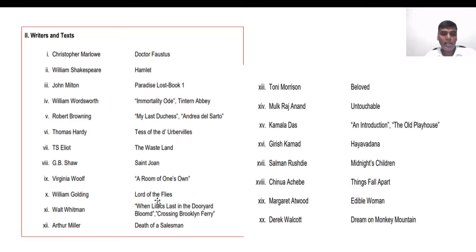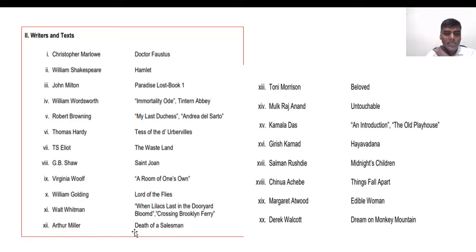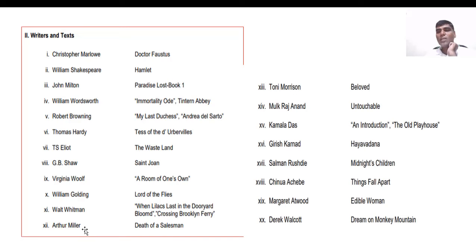Walt Whitman's two poems are When Lilacs Last in the Dooryard Bloom'd — an elegy written on the death of President Abraham Lincoln — and Crossing Brooklyn Ferry. Arthur Miller's Death of a Salesman is an interesting drama that talks about a common man's American dream and how an ordinary American works and worries for his success. Toni Morrison's Beloved is based on the theme of slavery and how slavery haunts the lives of slaves.